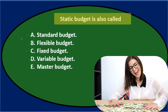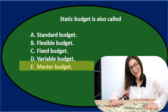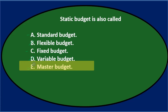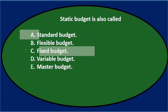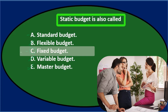Static budget is also called A. Standard budget, C. Fixed budget, or E. Master budget. The master budget is the overarching budget we put together, and it doesn't necessarily need to be the static type, so it's not E. Between standard budget and fixed budget, both sound reasonable, but static implies fixed — the one that assumes a certain level of production and doesn't move. So the final answer is C. Fixed budget.